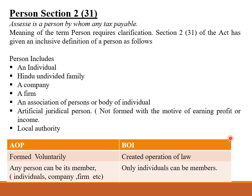An Artificial Juridical Person is not formed with a motive of earning profit. Examples can be a school, college, or university. A Local Authority means municipalities. So person includes all these things.